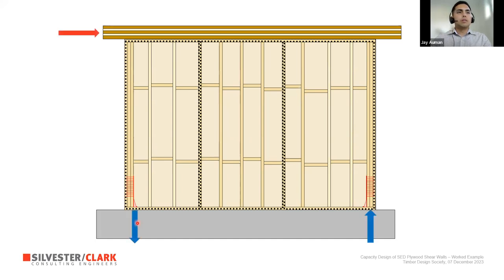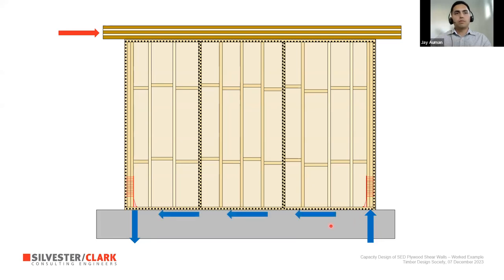Under lateral loading, an overturning moment is generated and a force couple is induced at each of the cords. The tension connector provides hold-down resistance, while the compression toe provides perpendicular-to-grain stiffness under compression. The bottom anchors resist base shear.